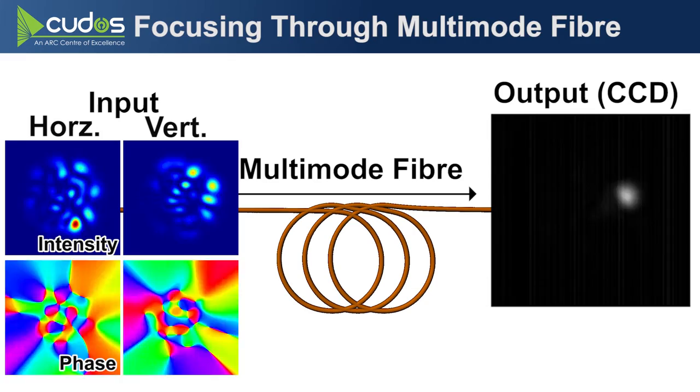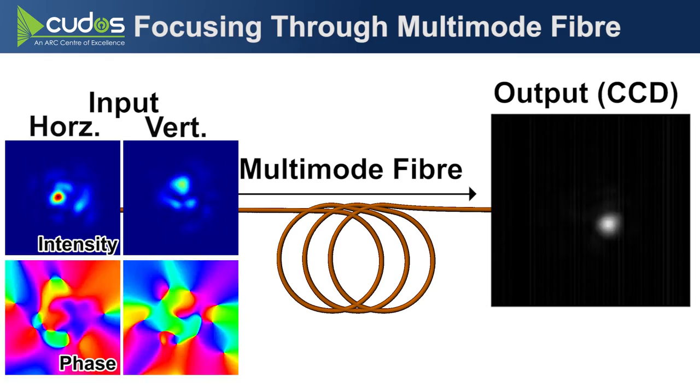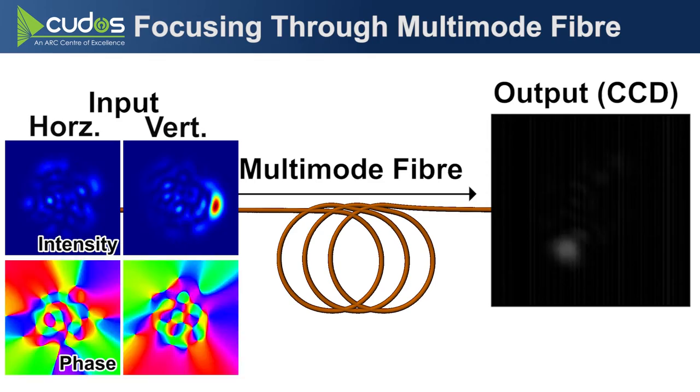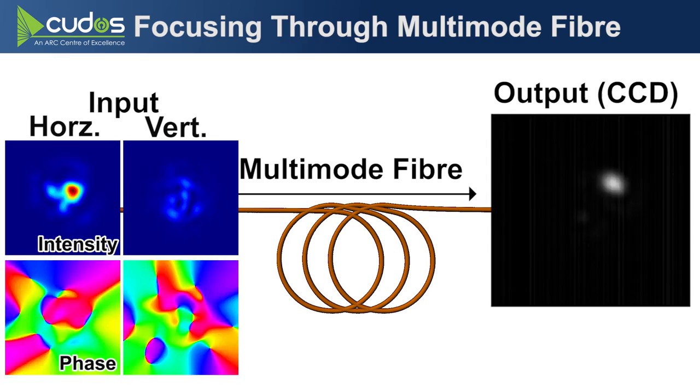So, here's a demonstration of that principle. Here, we're generating a focus spot at the output of the fiber by coupling in this mixture of amplitude, phase, and polarization at the other end. And then the mode mixing along the length of the fiber itself generates the focus spot at the far end. This is the principle behind multimode fiber imaging.